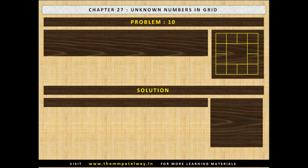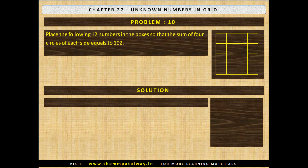Problem 10. Place the following 12 numbers in the boxes so that the sum of 4 circles on each side equals 102: 1, 1, 1, 1, 1, 4, 9, 16, 25, 36, 49, 64 and 81. Now stop the video and solve the problem.